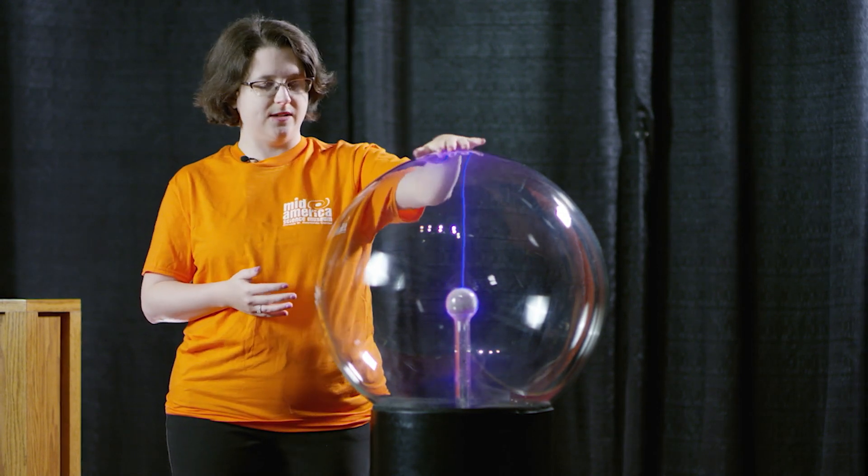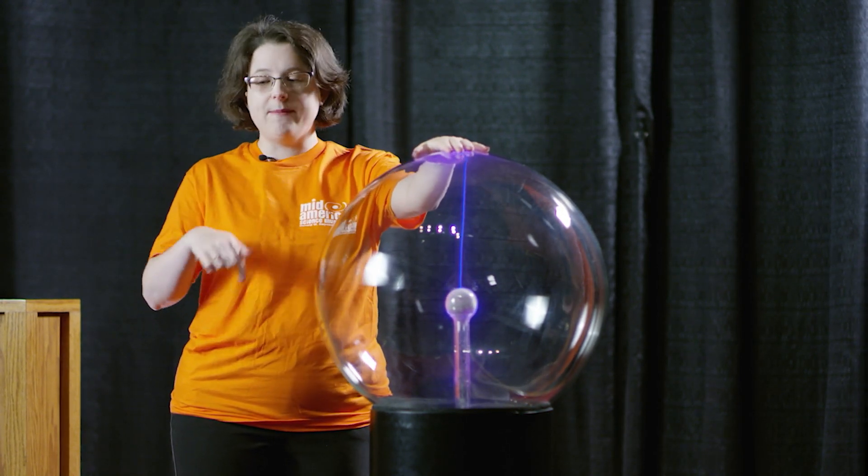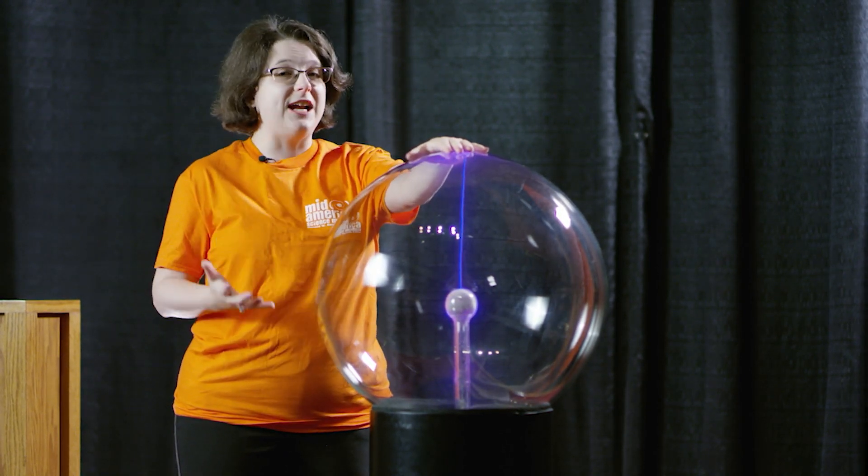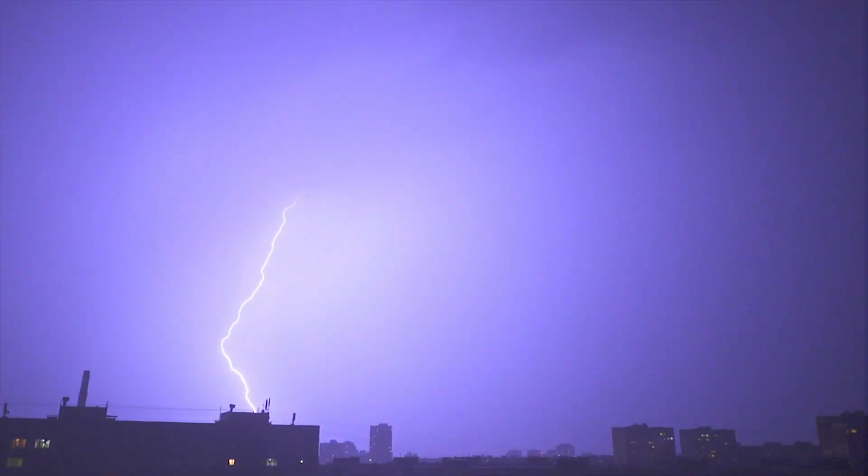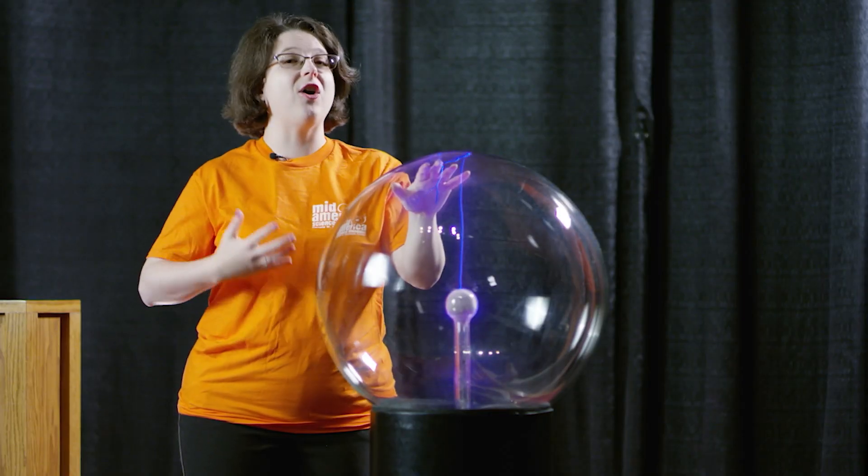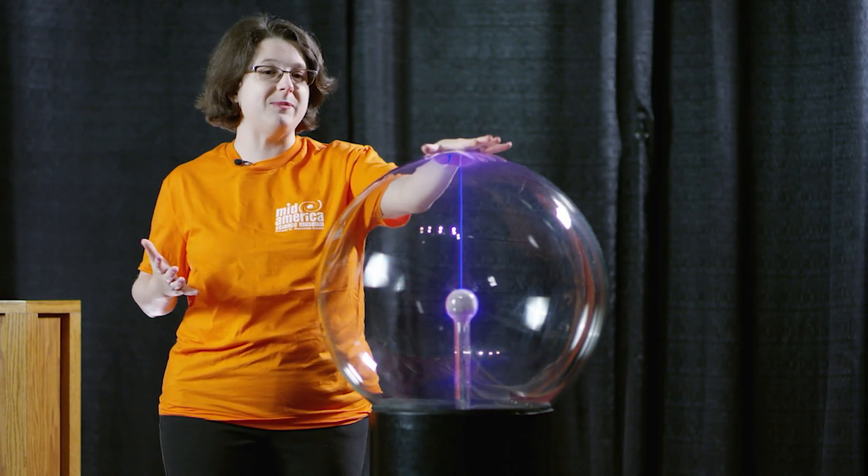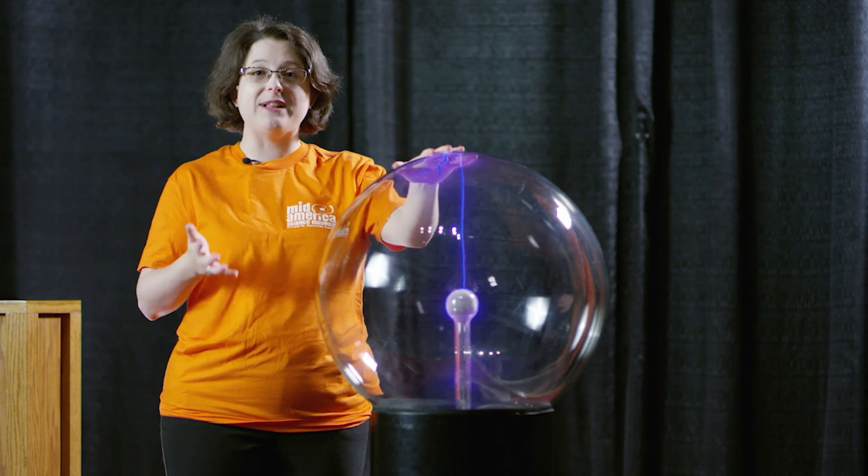But why is it attracted to my hand? Well, that's because I'm on the ground. All electricity wants to go to the ground. That's why lightning bolts strike from the clouds to the ground. And humans are conductors. Conductors mean that electricity flows through us really well.